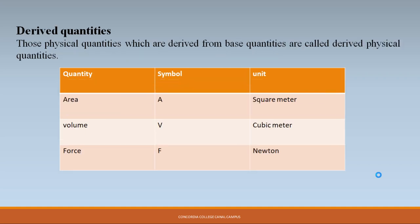Next, let's talk about derived quantities — those physical quantities which are derived from base quantities. For example, area is length multiplied by width, and its unit is square meter. Volume is length multiplied by width multiplied by height — symbol V, unit cubic meter. Force has symbol F and unit Newton; force is a derived quantity.